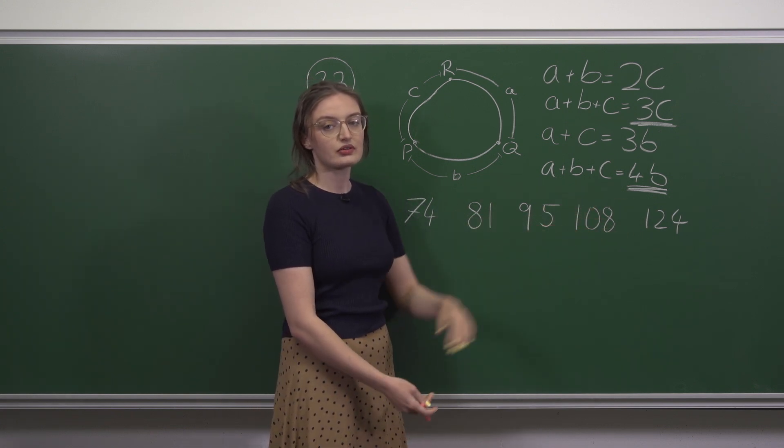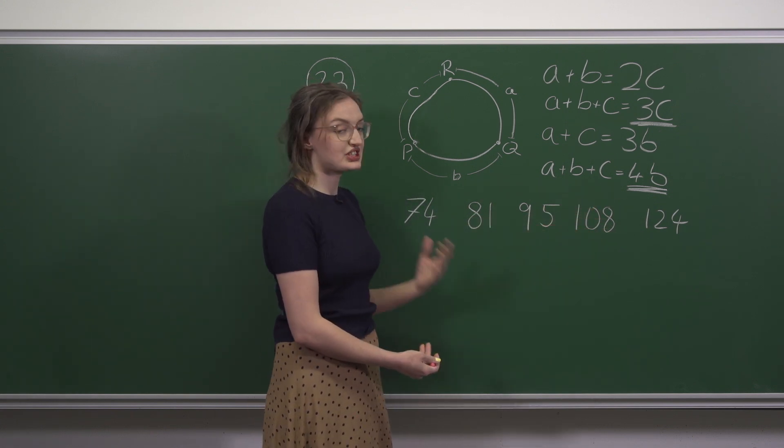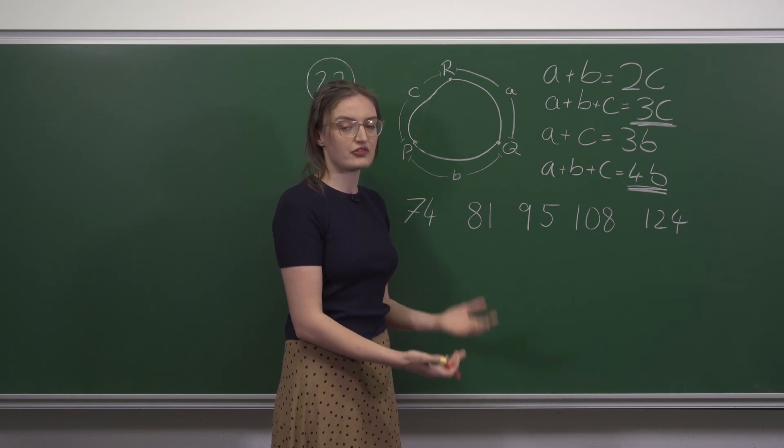These are the five options we were given for the possible length of roads. We're going to check if these numbers are divisible by 3 and if they're divisible by 4.